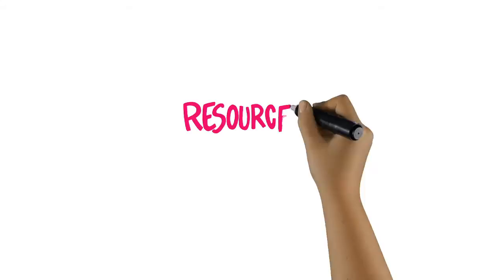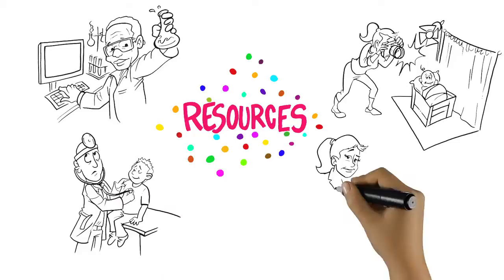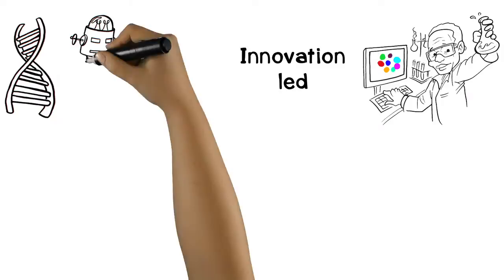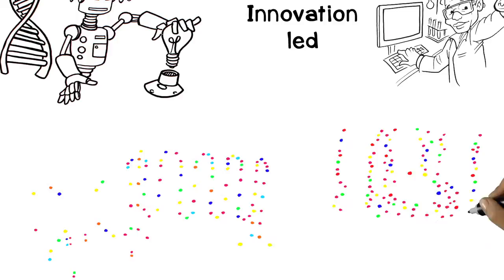We know that resources cluster around the kind of entrepreneur you have, and our resources tend to cluster around four types. We have the innovation-led cluster—your biotechs, your high-tech groups. You often find your serial entrepreneurs there, and there's a whole set of resources that support that kind of environment.